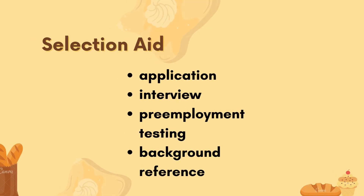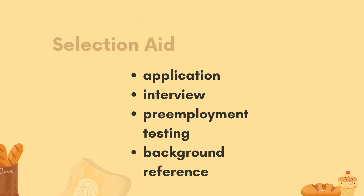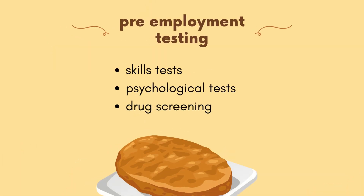Regarding selection aid, most companies select people from applicants through different methods: application, interview, pre-employment testing, and background reference. Through selection aids, they are able to select who excels in pre-employment testing and upon reviewing the application. Pre-employment testing includes skills tests, psychological tests, and drug screening — to know whether you are capable.